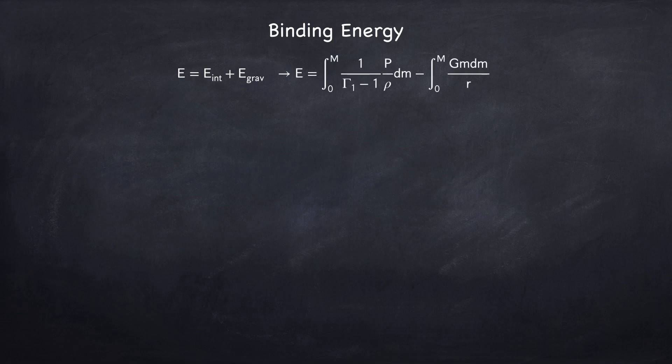Okay, now that we have an equation of state, we can go ahead and find the binding energy of the Sun. The binding energy, remember, is just the internal energy plus the gravitational potential energy.